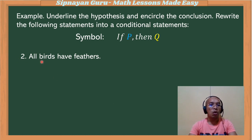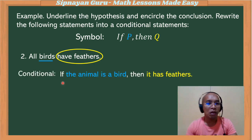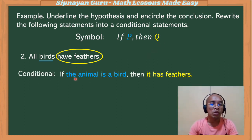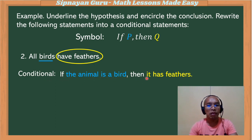Example number two: 'All birds have feathers.' This is just a simple statement. The subject will be the hypothesis, so 'bird' is our hypothesis, and the predicate 'to have feathers' is the conclusion. In our conditional statement, we insert terms to make the sentence grammatically correct: 'If the animal is a bird, then it has feathers.' This is our conditional statement derived from this simple sentence.